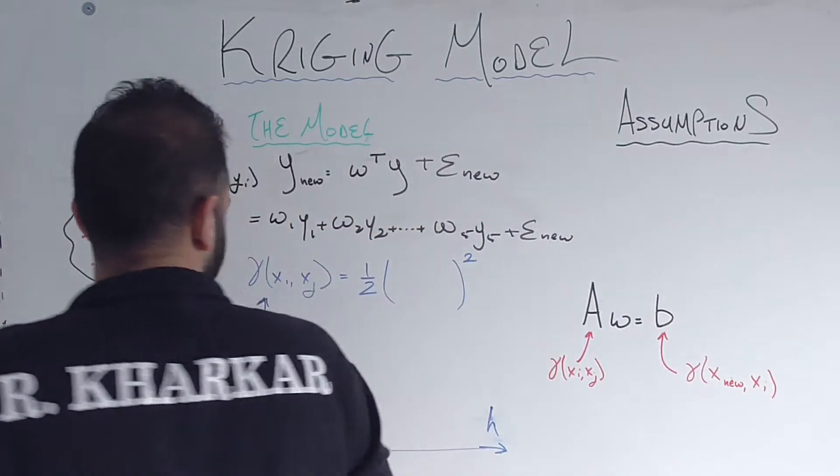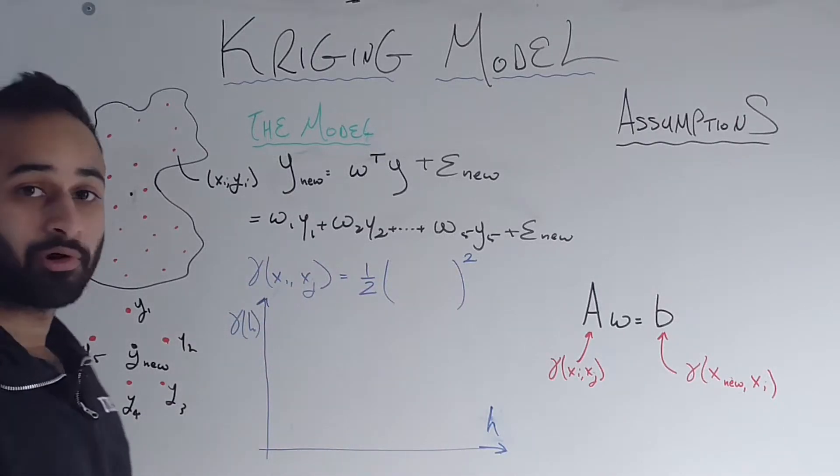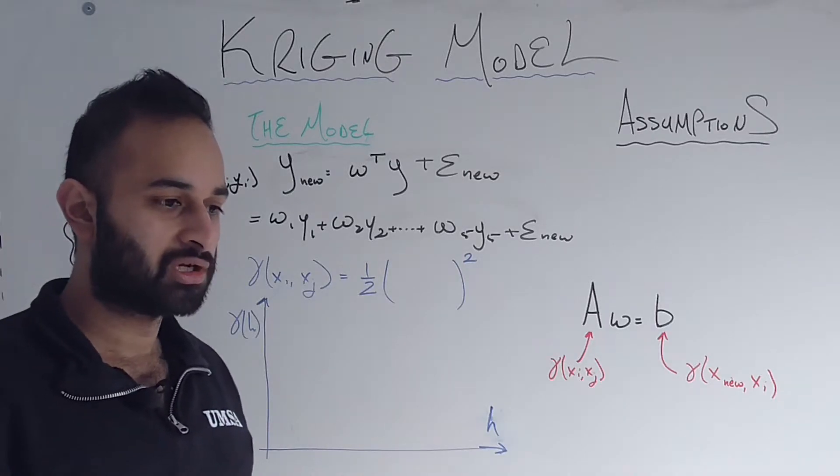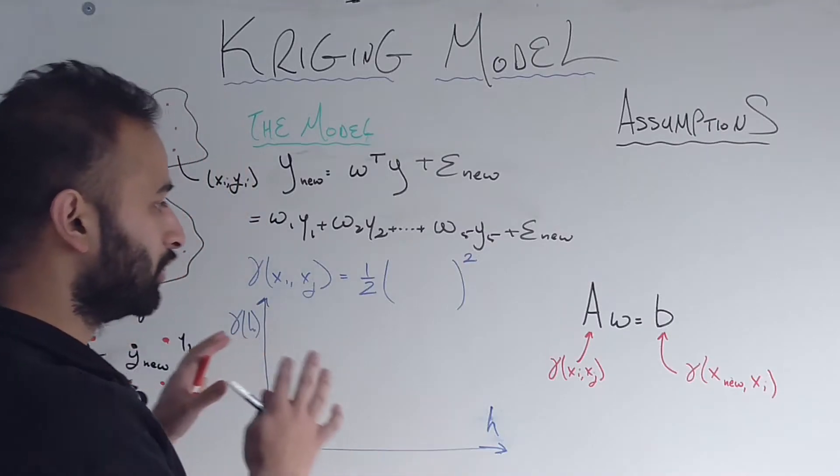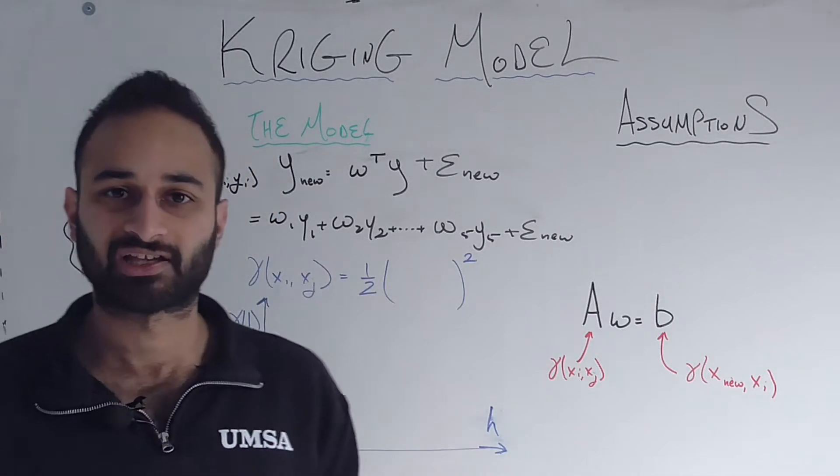And this is where we use this thing called a variogram in spatial stats. I wanted to make sure to include the variogram in this video because it's such a widely used tool, such a widely used graph in spatial stats. So I wanted to give you first some exposure to it, and then we'll see how it's used in the context of the Kriging model.